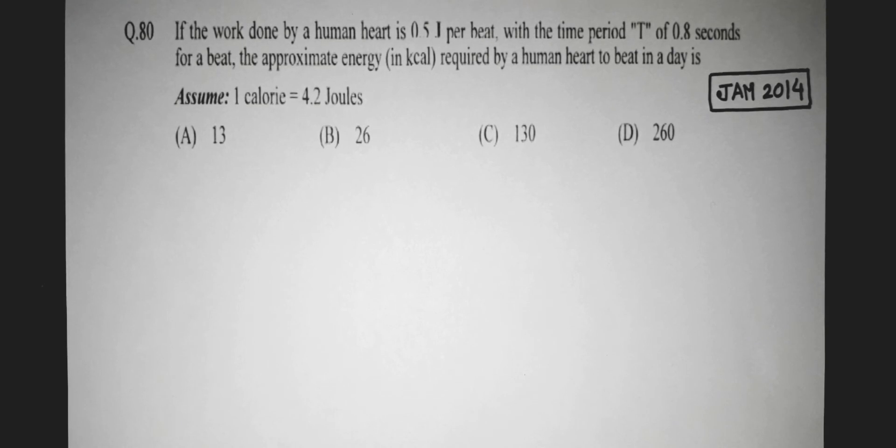If the work done by a human heart is 0.5 joules per beat with the time period T of 0.8 seconds for 1 beat, what is the approximate energy in kilocalorie required by a human heart to beat in a day? The options are: option A equals 13, option B 26, option C 130, and D 260.